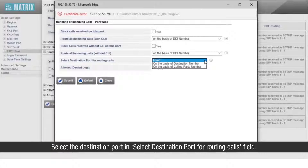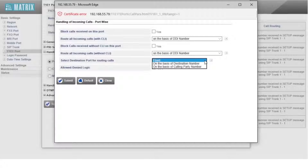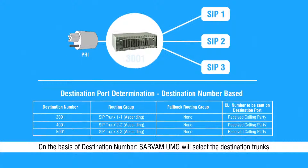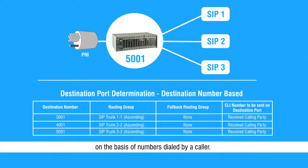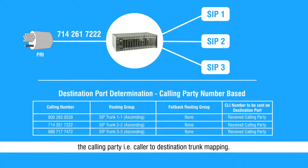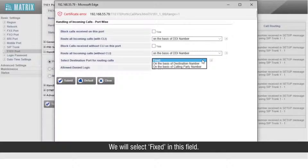Select the destination port in the 'Select Destination Port for Routing Calls' field. The available options are: Fixed — calls are routed to a fixed trunk irrespective of calling number and destination number; On the basis of destination number — Servum UMG selects the destination trunk based on the number dialed by the caller; On the basis of calling party number — Servum UMG selects the destination trunk depending on the calling party, i.e., caller-to-destination trunk mapping. We will select Fixed.